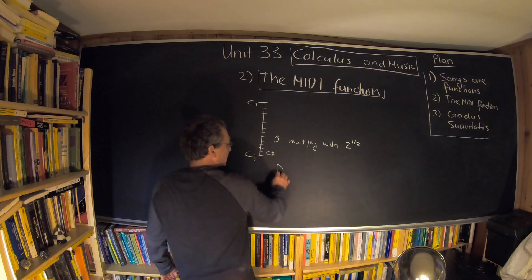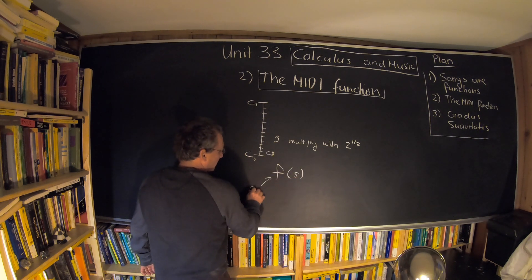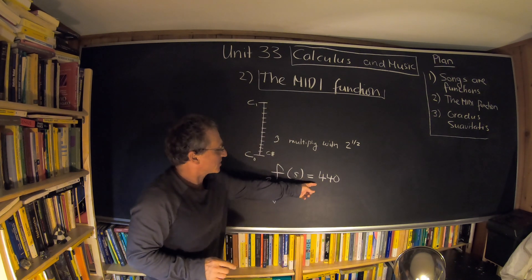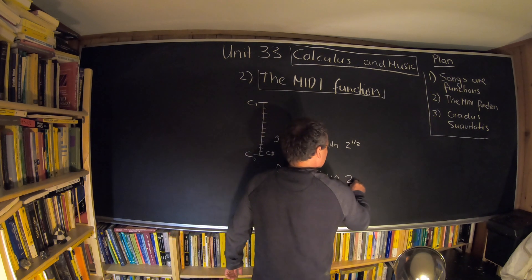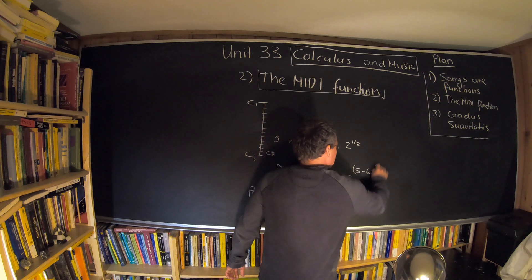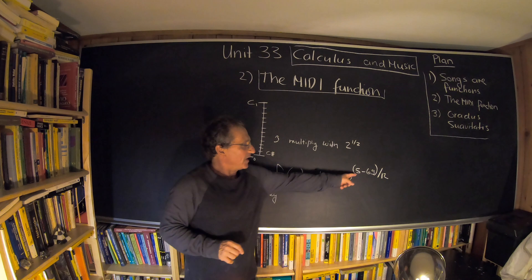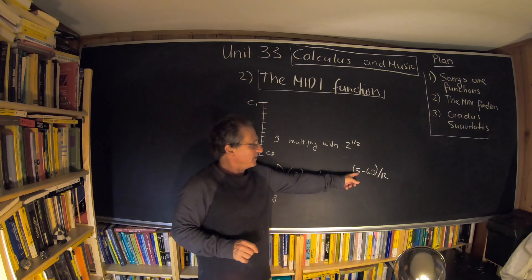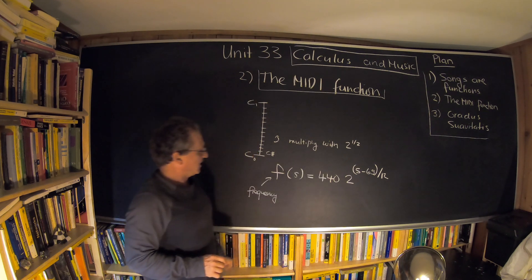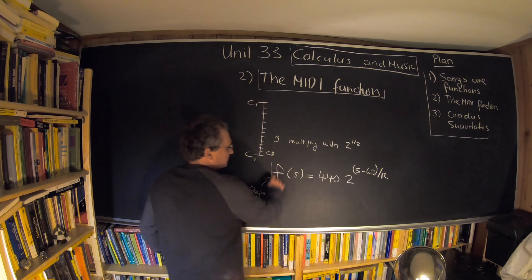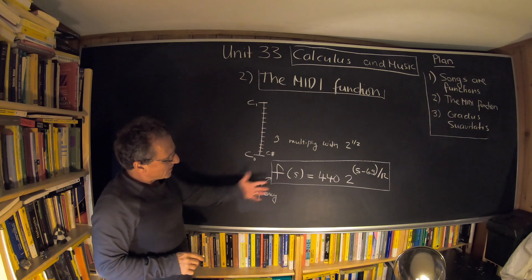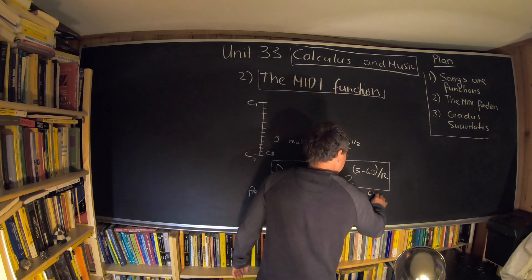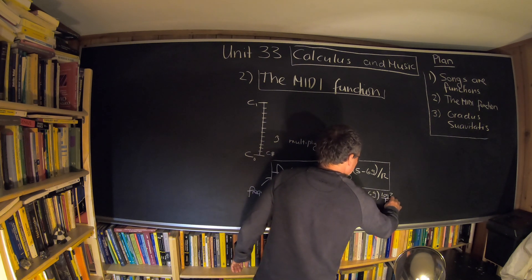The frequency f is given by the official MIDI function: f(s) = 440 × 2^((s − 69)/12). If we take s equal to 69, we get exactly 440 Hz, which is the note A. We can also rewrite this using the natural exponential: f(s) = 440 × e^((s − 69) × ln(2)/12).